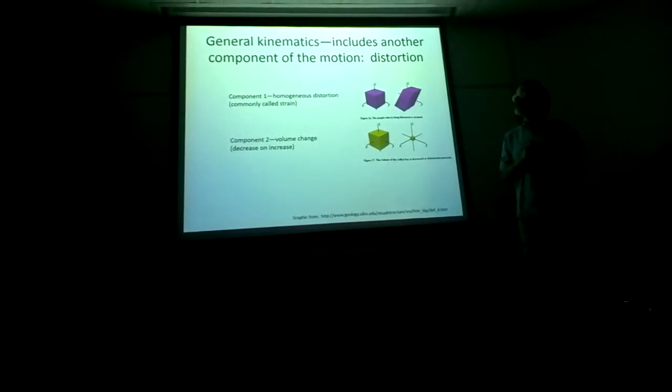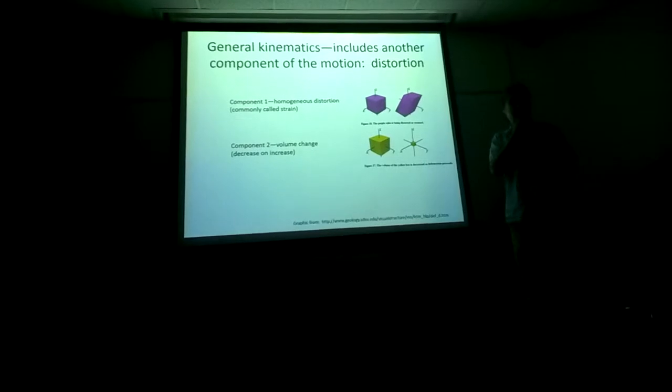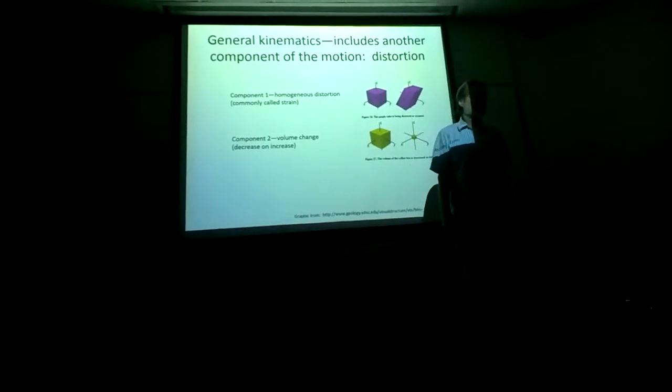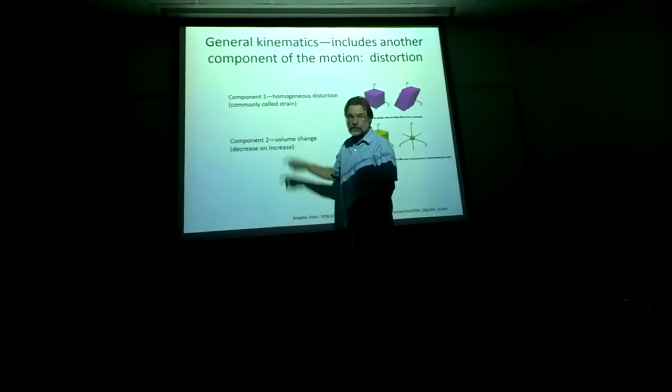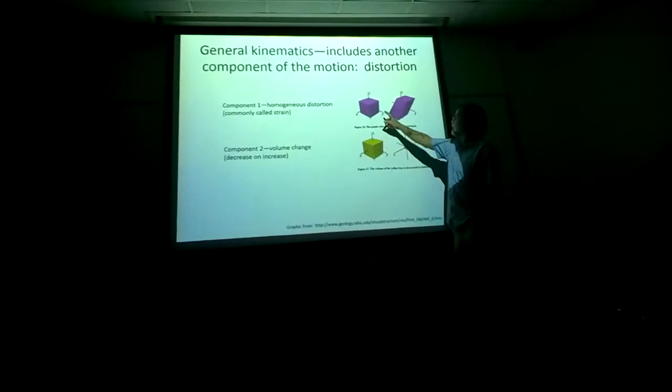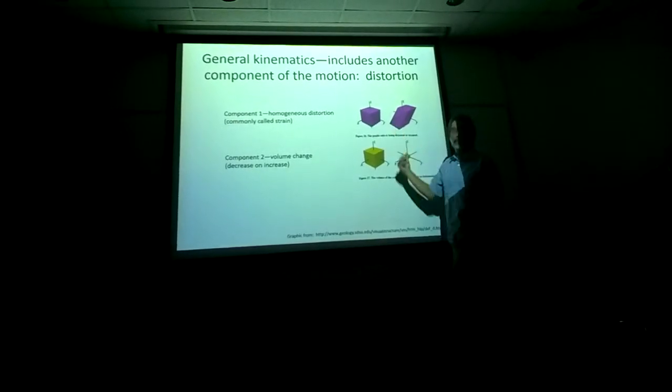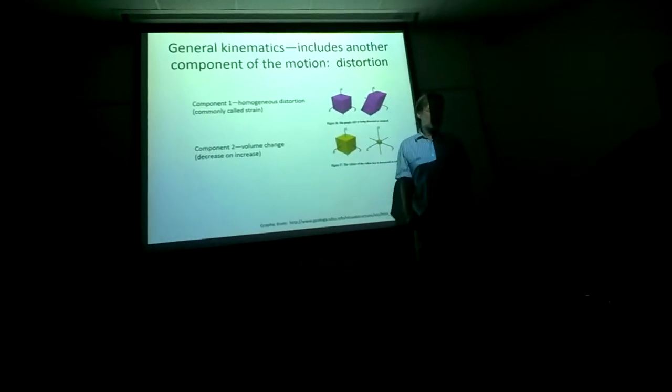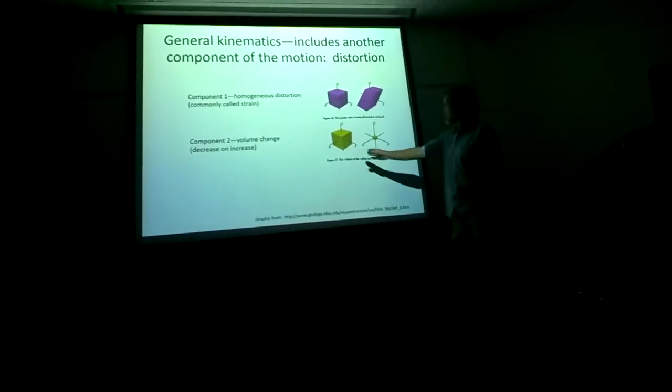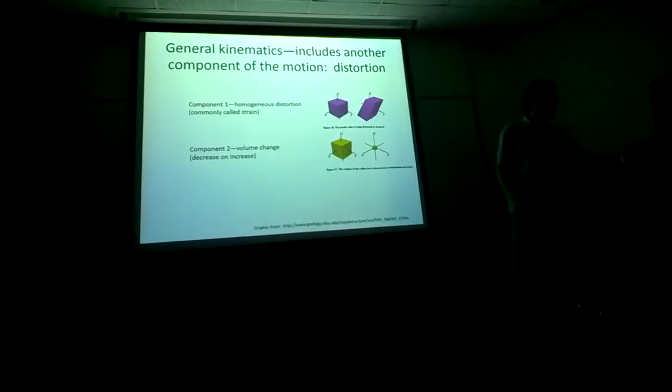General kinematics includes another component of that motion, and that motion I'm going to refer to initially as distortion, or you could also call it deformation. The first of those components is what I'll refer to here as homogeneous distortion. Homogeneous distortion is a quantity called strain or finite strain. In the simplest sense, you can take an object and distort it. It's homogeneous distortion because the line elements that make up this distortion remain straight from point A to point B, or from the undeformed to the deformed condition.